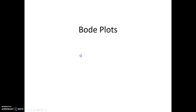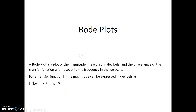A Bode plot is essentially a plot of the magnitude and the phase angle. The magnitude is measured in decibels, so for a transfer function H, the magnitude in decibels is expressed as 20·log base 10 of |H|. A Bode plot is just those two plots — magnitude and phase — but plotted against a logarithmic frequency scale. Let's take a look at a couple of examples.